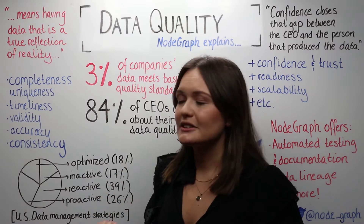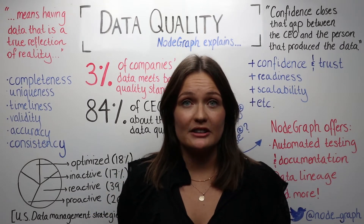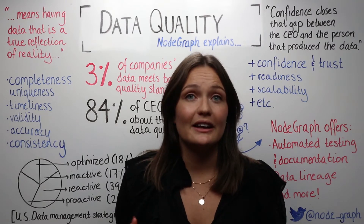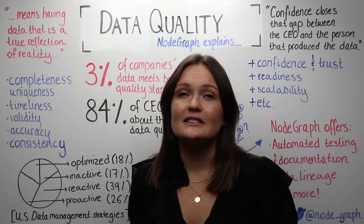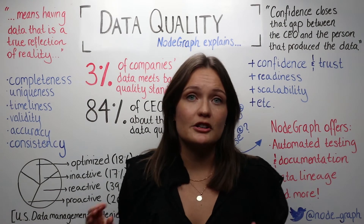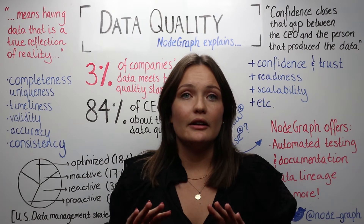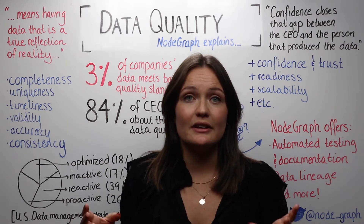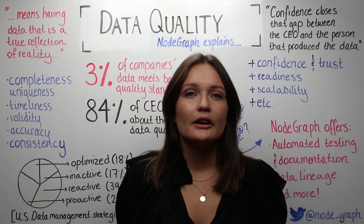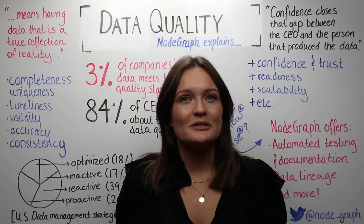Accuracy is basically whether your data is accurate — if it is a true reflection of your data. And consistency is especially important if you are in a large organization and displaying data across a huge number of departments. You need consistent data throughout the whole organization.